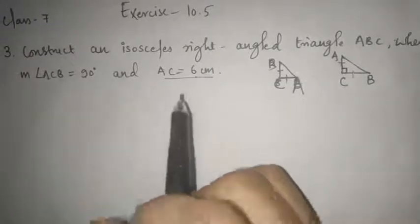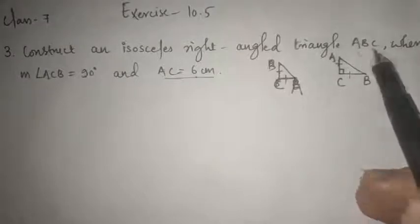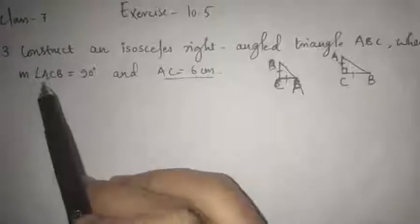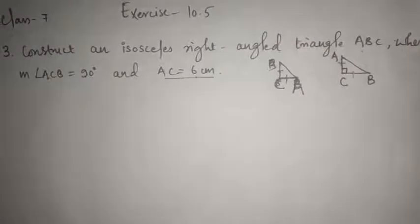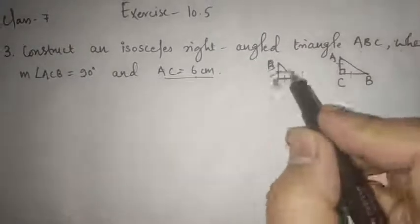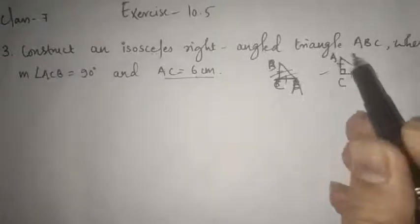Construct an isosceles right angle triangle ABC where measure of angle ACB equals to 90 degree and AC equals to 6 cm. So here I have drawn one triangle. Okay, this is your triangle ACB.